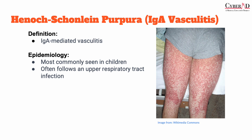First, we're going to cover Henoch-Schönlein purpura, or IgA vasculitis. HSP is an immune-complex-mediated vasculitis that typically presents with a tetrad of symptoms: palpable purpura, arthritis or arthralgias, abdominal pain, and renal disease. It is characterized by the deposition of IgA immune complexes within the walls of small blood vessels. The exact pathogenesis of IgA vasculitis, or HSP, is unknown, but it is thought to be multifactorial.